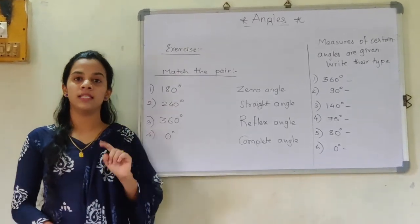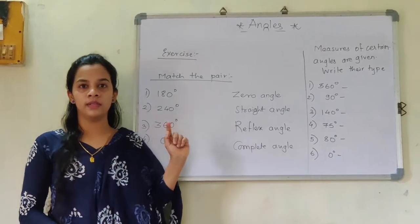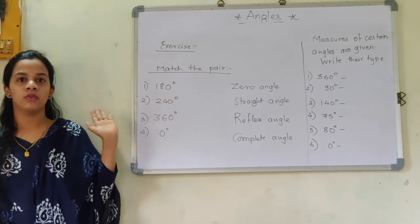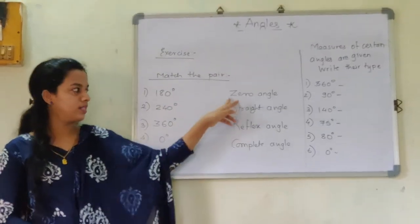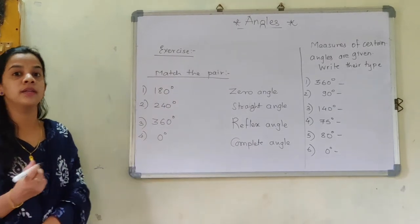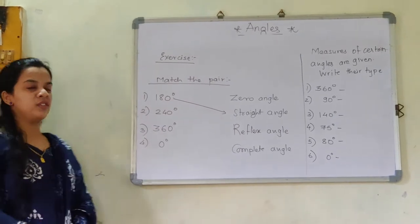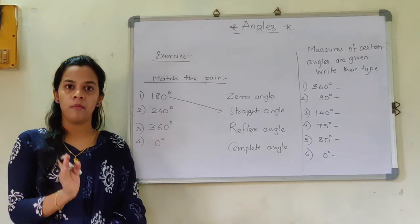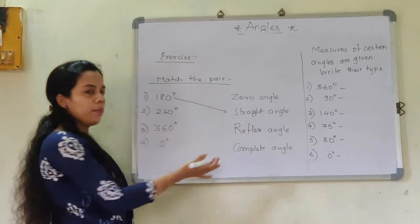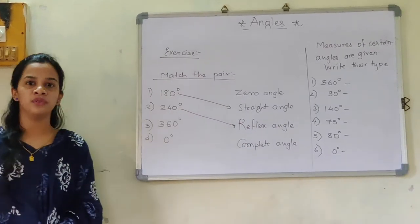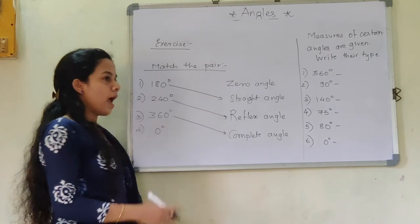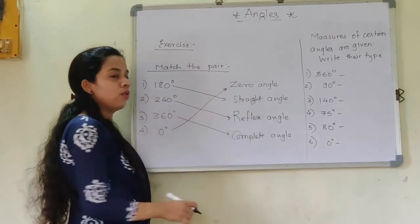We have just now studied the types of angles, so now we will complete the exercise. There is a match-the-pair activity where one side gives you the measures and the other side gives you the names. 180 degrees is the straight angle. 240 degrees is more than 180 but less than 360, so it is reflex angle. 360 degrees is the complete angle. And 0 degrees is termed as the zero angle.